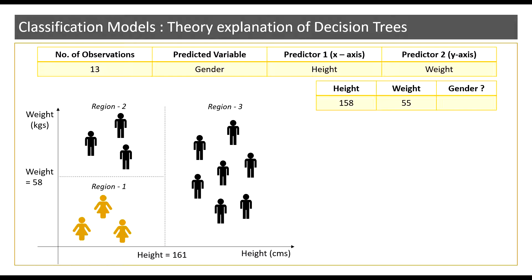Now let us say we have an observation where the height is 158 centimeters and the weight is 55 kgs and I want to predict the gender for this particular observation. We will now see how the decision tree model helps predict gender for this particular observation.